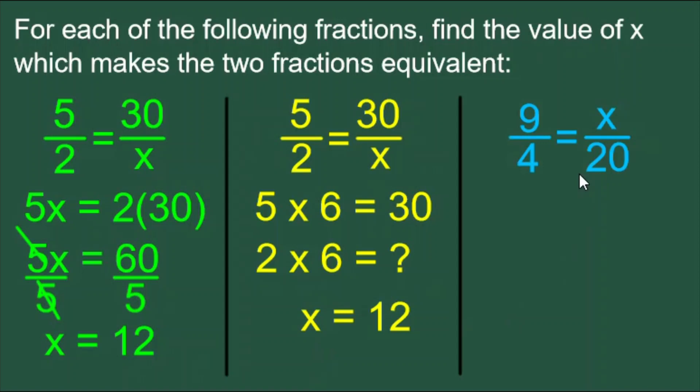For the third example in blue, I'm going back to cross multiplication because it's my favorite method. Why? Because cross multiplication can be used for so many different types of math problems, like when we're converting units. Bottom times top equals top times bottom, so I have 4x equals 9 times 20.